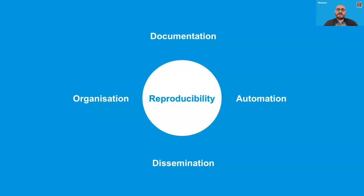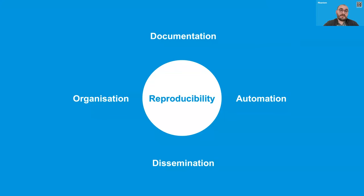From the three events we learned that urbanism researchers can benefit from improving their knowledge and skills on all four facets of reproducibility: organization — how one structures their project; automation — how one works in a scripted way; documentation — both in terms of machine and human readability; and dissemination — recognizing that dissemination is not only about open access papers but all kinds of research products.